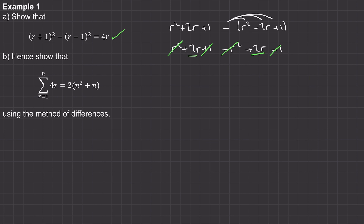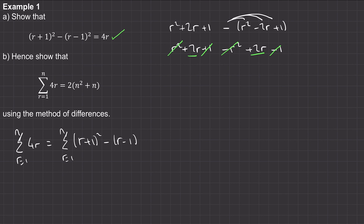For part b, rather than working out the sum from r equals one to n of four r, we can work out the sum of this expression between r equals one and n, because we've just proven they're exactly the same. So the sum from r equals one to n of four r is exactly the same as the sum between one and n of r plus one squared minus r minus one squared.